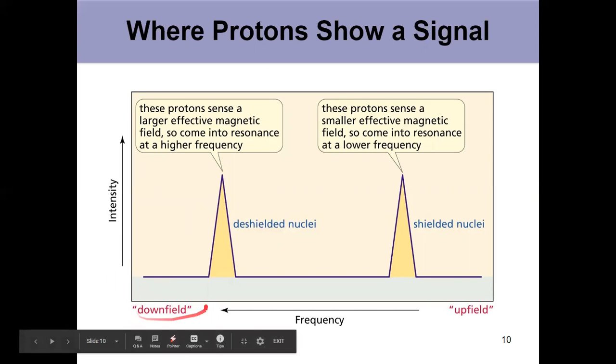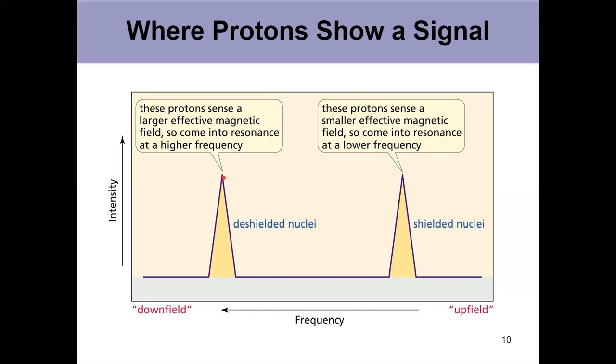See it right here? Left-hand side, downfield. Right-hand side, upfield. On the left, these have a larger effective magnetic field, higher frequency. Everything opposite down here. Shielded on the right, deshielded on the left.